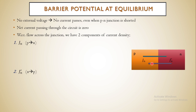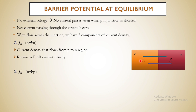Let us understand J_N and J_N' in more detail. J_N' is the current density flowing from the P region to the N region. Since free electrons are minority charge carriers in the P region, this is called the drift current density, because the free electrons are under the influence of the electric field due to the potential barrier. The equation for J_N' is: J_N' = N·E·μ_N·E, where N is the number of electrons per unit volume, E is the charge of the electron, μ_N is the mobility of the electron, and E is the electric field. This is equation number one.